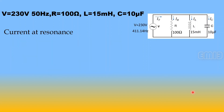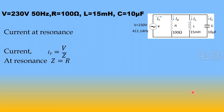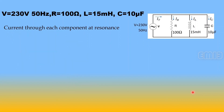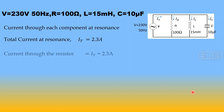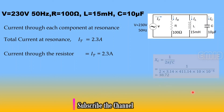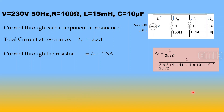At resonance, Z = R, so total current IT = V/R = 230/100 = 2.3 A, which is the minimum current drawn from the source. This is also equal to the current through the resistance IR.